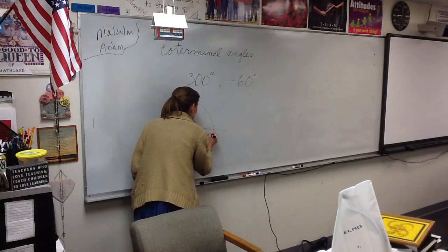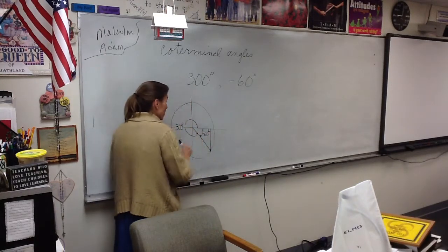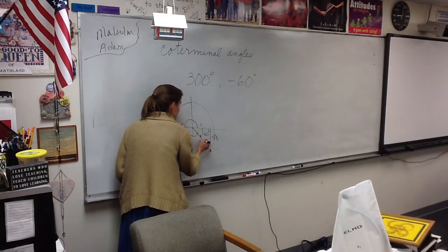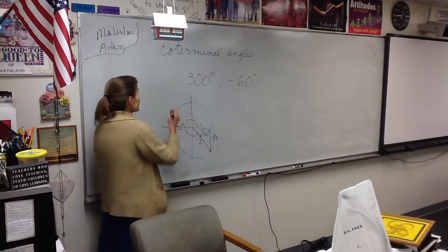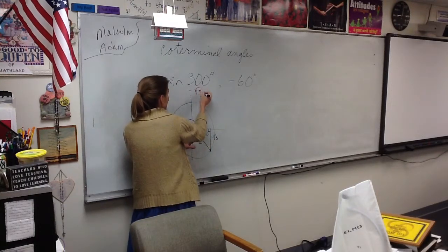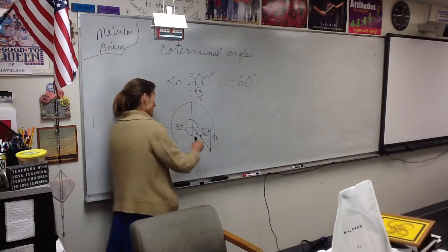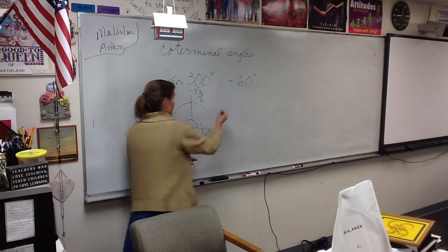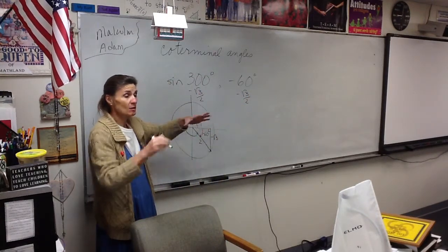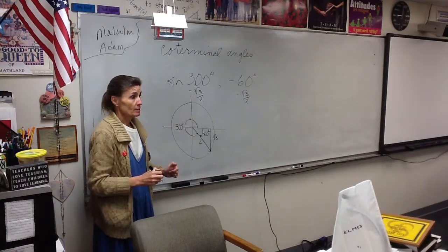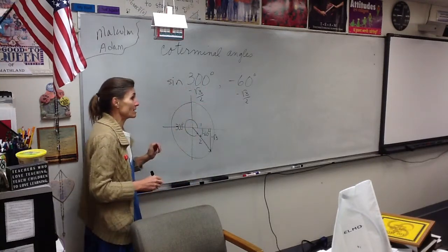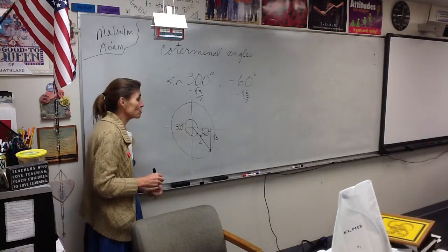So if we make our perpendicular and make our triangle, this side would be negative root 3, this side would be 1, and this side would be 2. So if I said what's the sine of 300, you would say the sine of 300 is negative root 3 over 2. But if I said what's the sine of negative 60, wouldn't you say exactly the same thing? Because they are in the same place — they create the same triangle. So all of their trig functions will be the same. The cosine will match, the tangent will match, because they are in the same spot.